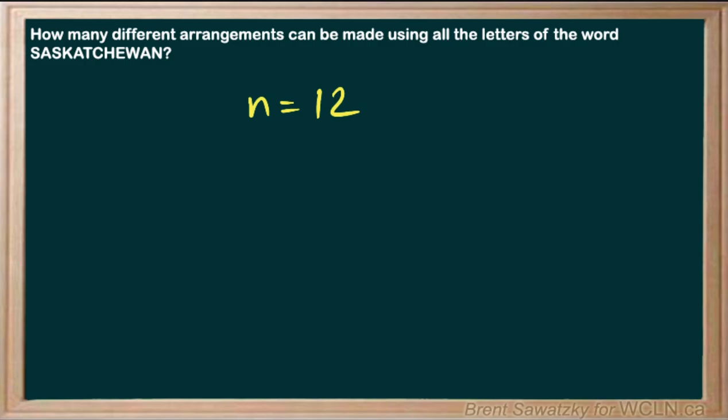Because we're talking about a permutation, we can use our permutation equation. In this case, we're taking 12 letters and ordering them into groups of 12. So we have nPr equals 12P12, which is 12 factorial over 12 minus 12 factorial.